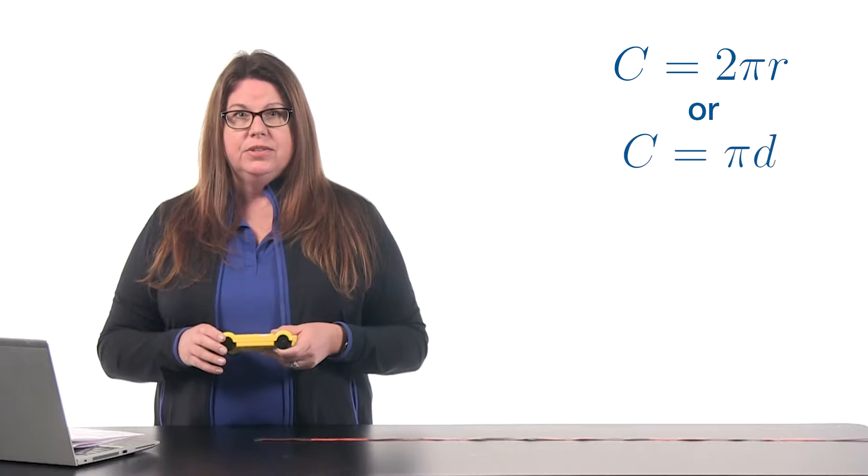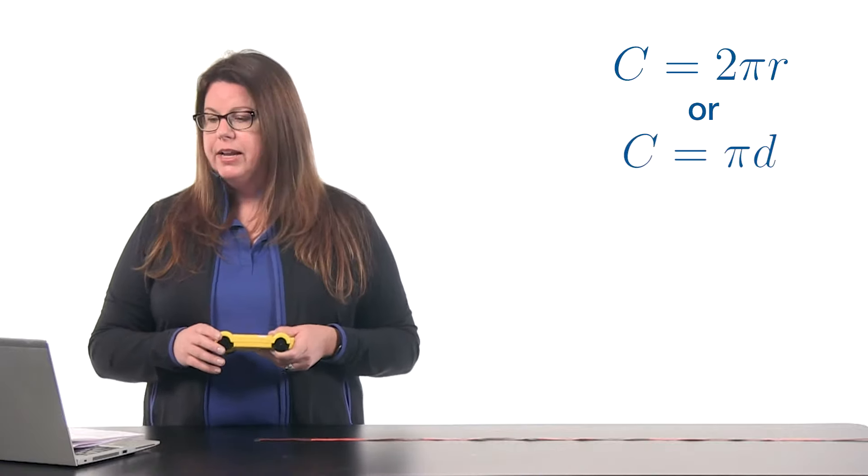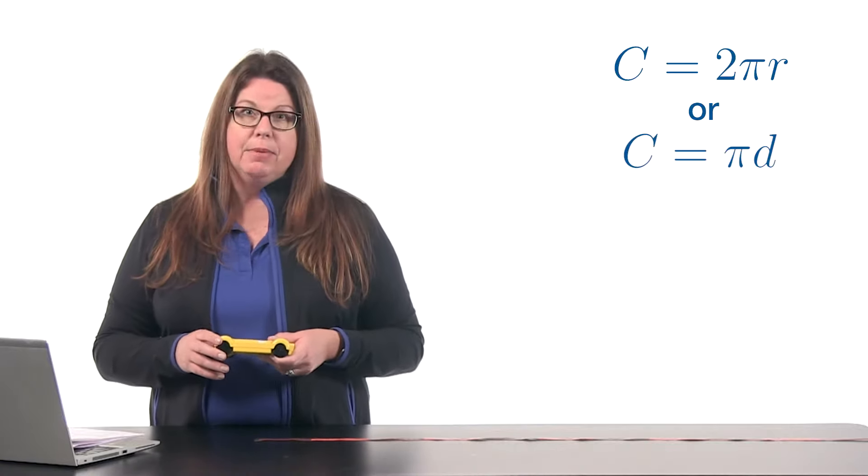In this activity you're going to have to be working with circumference, so you may or may not have been introduced to the formula. Let's have a quick discussion about it. Calculating circumference is going to be 2 pi times radius or it can be calculated with just pi times the diameter.